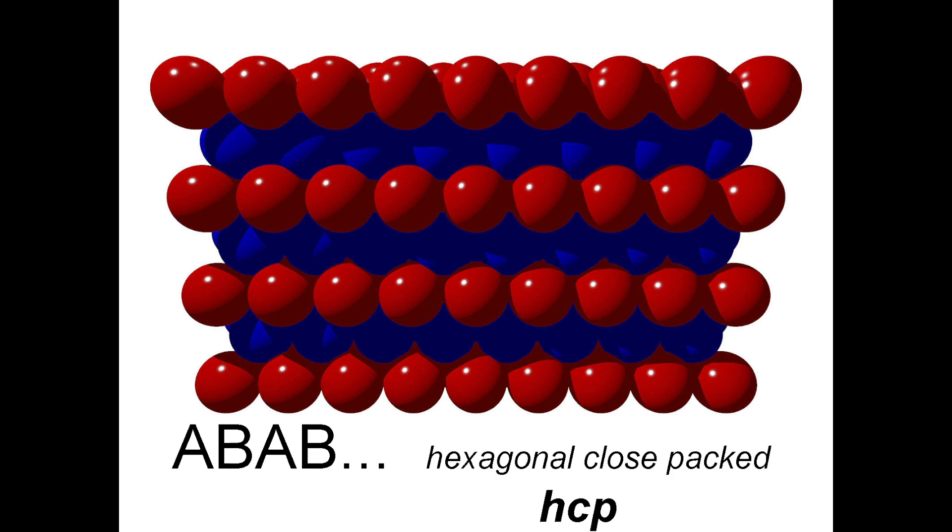In the next set of videos, we will look at exactly why it's called hexagonal close packed, but for now it's important to recognize that you are expected to know this point. A, B, A, B structures are called HCP, or hexagonal close packed.